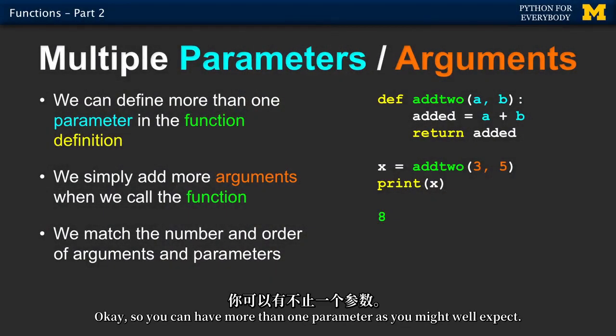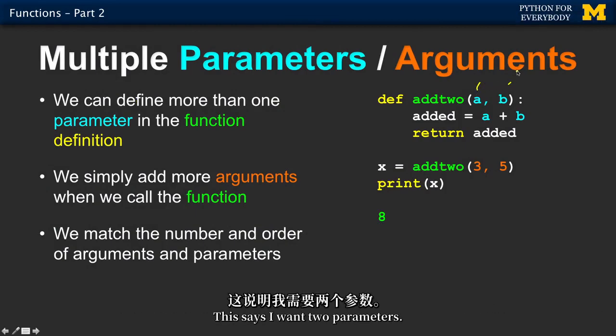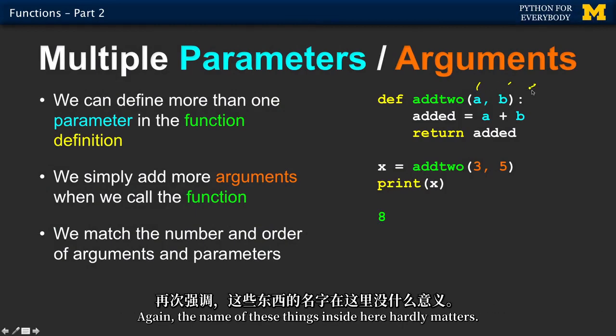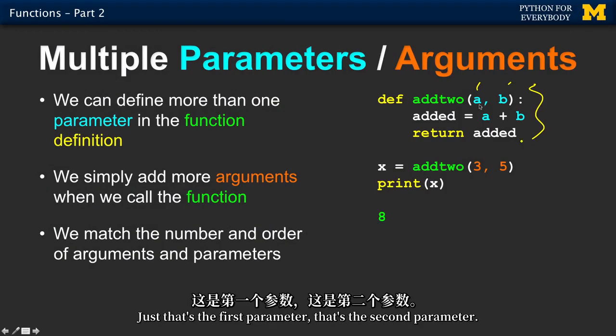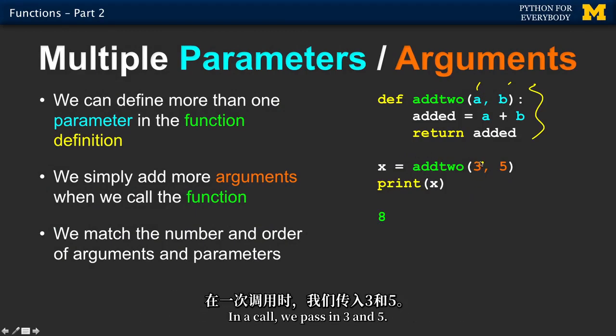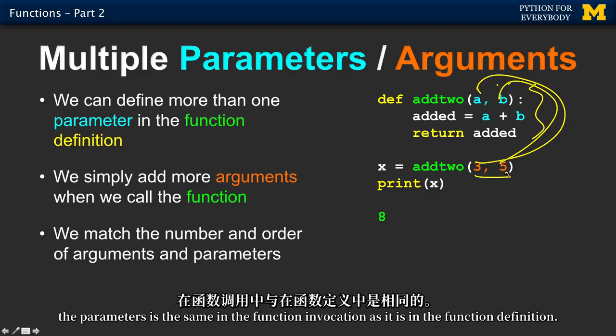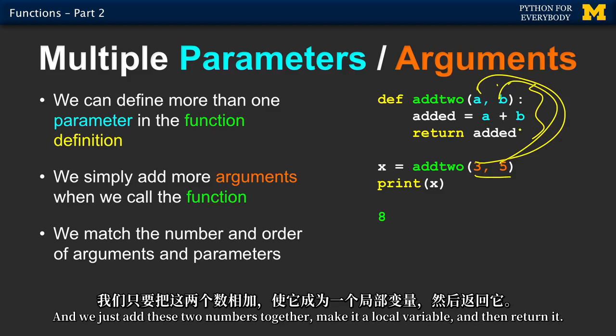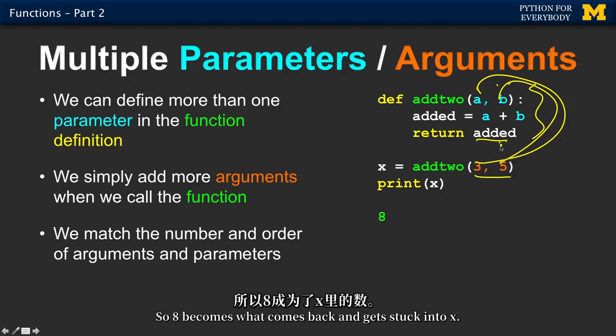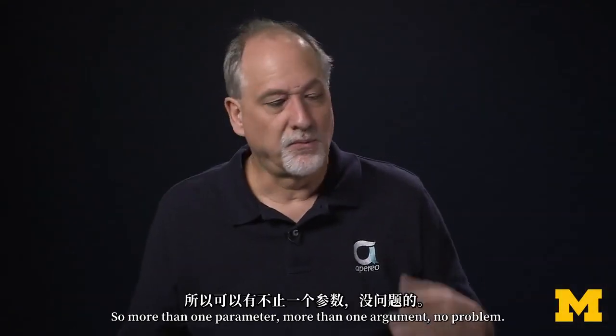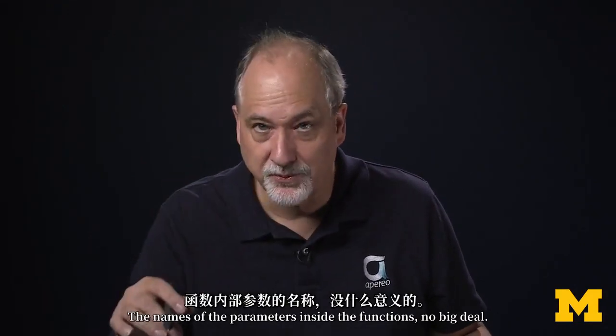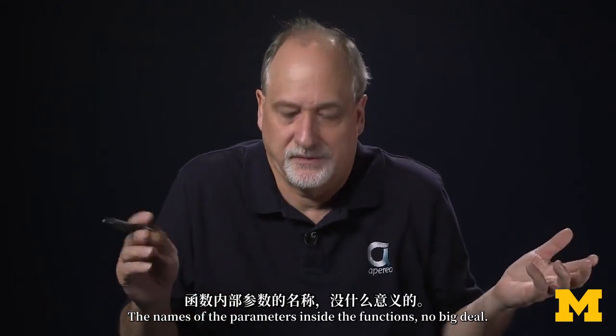So you can have more than one parameter as you might well expect. This says I want two parameters. Again the name of these things inside here hardly matters. Just that's the first parameter, that's the second parameter. In a call we pass in three and five. So that is easy. The number and order of the parameters is the same in the function invocation as it is in the function definition. And we just add these two numbers together, make it local variable and then return it. So eight becomes what comes back and gets stuck into x. So more than one parameter, more than one argument, no problem. The names of the parameters inside the functions, no big deal.